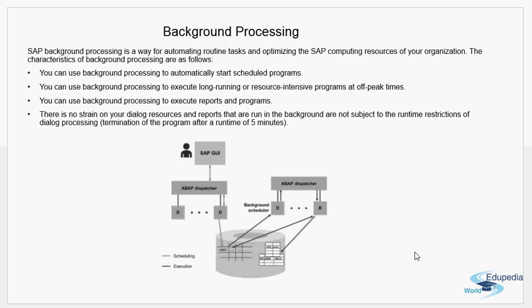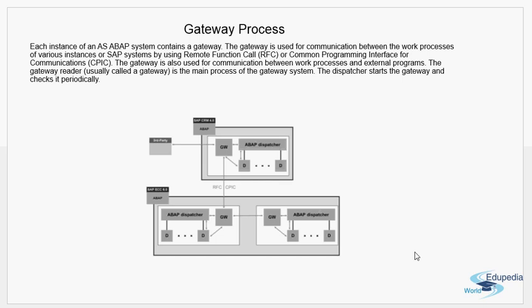In an SAP system, there should be at least one background work process, but during SAP upgrades or when transports are being imported, you should have at least two. In a real-world scenario, every instance will have multiple background work processes. As a reminder: every instance should have at least two dialogue work processes, one enqueue, one update work process, and one spool work process, though you can configure more of each.